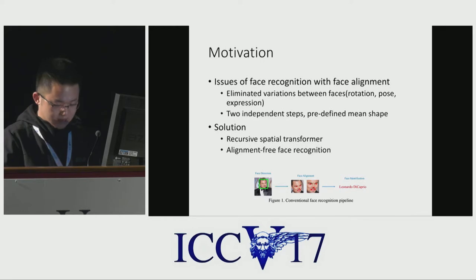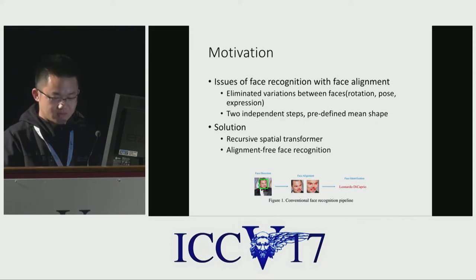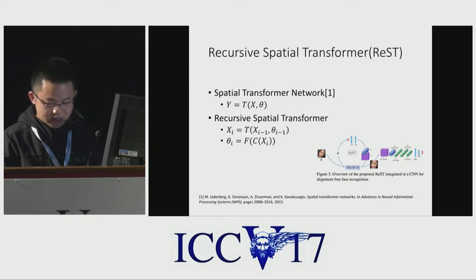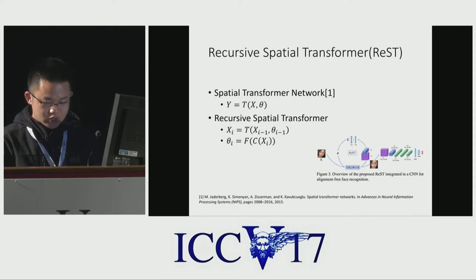Our work is inspired by spatial transform networks, and we designed a hierarchical recursive spatial transform network to do alignment-free face recognition. The spatial transform network can automatically learn an optimal transformation for the classification task. As shown in the figure, our approach consists of two parts: the recursive spatial transformation, followed by the deep classification. The spatial transformation layer produces the transformed feature map by sampling from the input X according to the spatial transformation parameter theta.